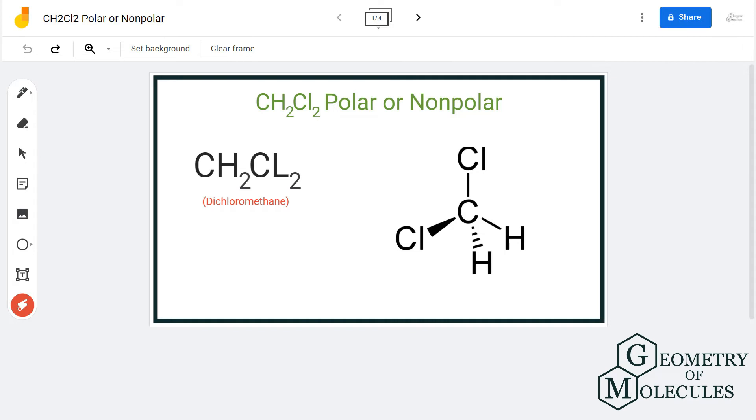If you look at its structure, you will see that the chlorine atoms are located on this side of the plane and hydrogen atoms are located on the opposite side of the plane.